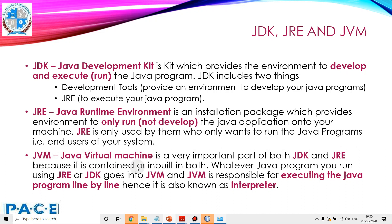JVM — Java virtual machine — is a very important part of both JDK and JRE, because it is contained or built into both. Whatever Java program you run using JRE or JDK, it goes into the JVM. The JVM is responsible for executing the Java program line by line; hence it is also called an interpreter.